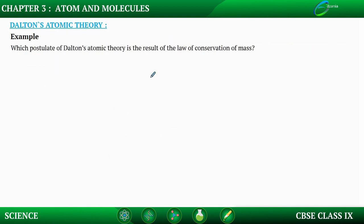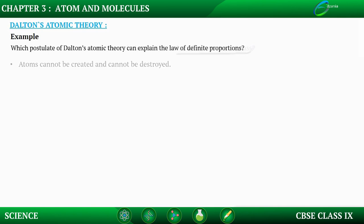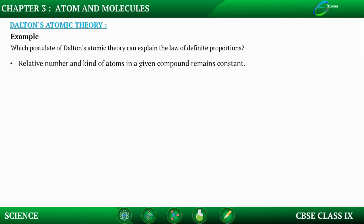The next question: which postulate of Dalton's atomic theory is the result of the law of conservation of mass? Dalton's postulate that atoms cannot be created and cannot be destroyed explains the law of conservation of mass. The next question: which postulate explains the law of definite proportions? Dalton's postulate that the relative number and kind of atoms in a given compound remains constant explains the law of definite proportion.